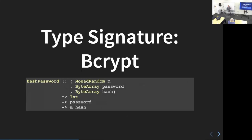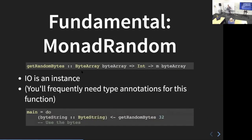Now moving on to bcrypt. Again we have the byte arrays at the top for the password and hash, but you'll also see a type class constraint for MonadRandom. MonadRandom is super simple — all it is is one function, `getRandomBytes`, which you pass an integer for the number of bytes you want and you get back a byte array: a string, byte string, ScrubbedBytes, or a newtype of any of those of the appropriate length. The main instance is just IO. The fact that it's its own separate monad is nice because you know it can't do arbitrary IO — the only side effect it can have is generating random numbers, which makes it safer.